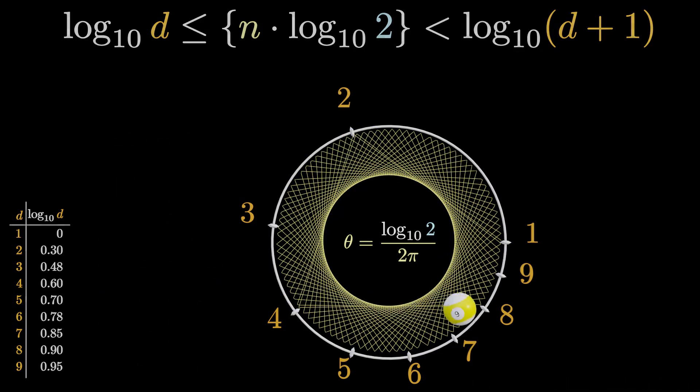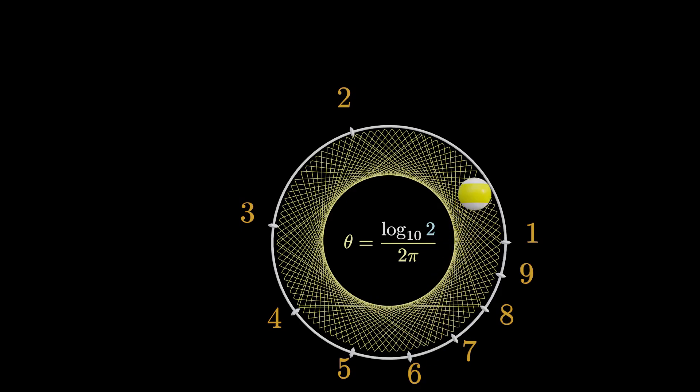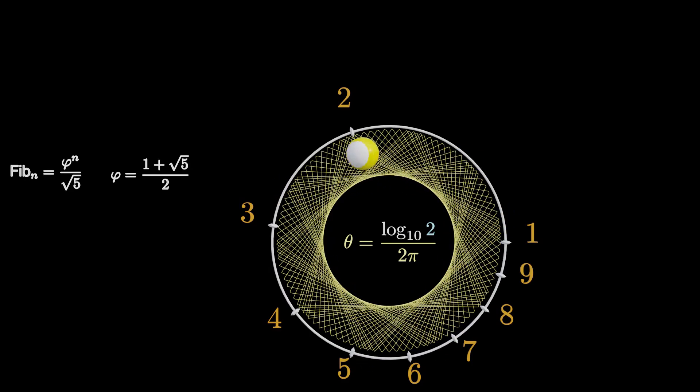The Fibonacci sequence can be treated similarly. There is a closed form for the computation of the Fibonacci numbers. For large Fibonacci numbers, the value is dominated by the first term, which is just another exponential function. So we only have to replace the base 2 by the golden ratio. And we can apply the same reasoning with a different irrational angle theta to end up with exactly the same probabilities.